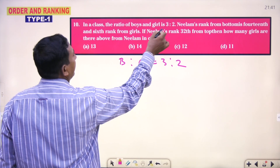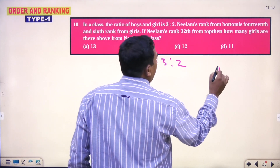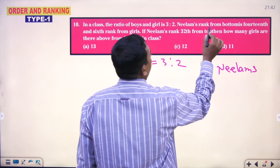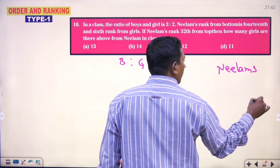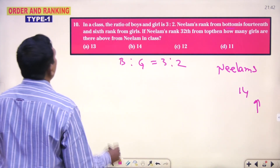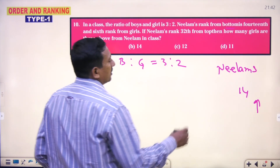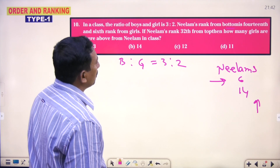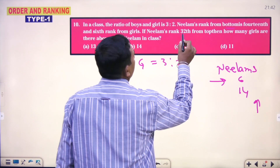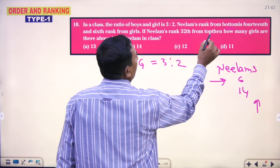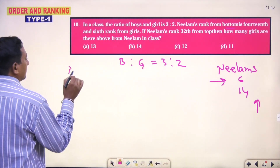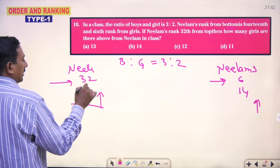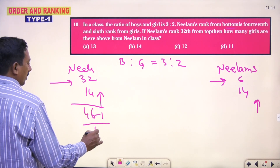In a class, the ratio of boys and girls is 3 is to 2. Neelam's rank from bottom is 14th, from bottom is 14th. And 6th rank from girls. If Neelam's rank is 32 from top. So Neelam is a person 14th from bottom, 32 from top. So total: 32 plus 14 equals 46 minus 1, which is 45 members.